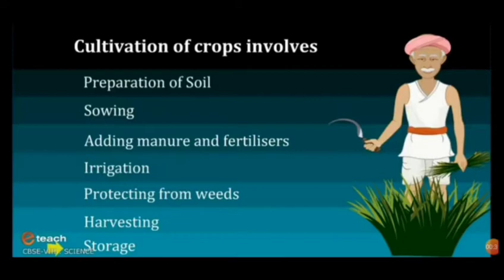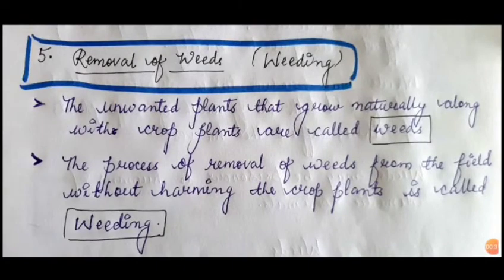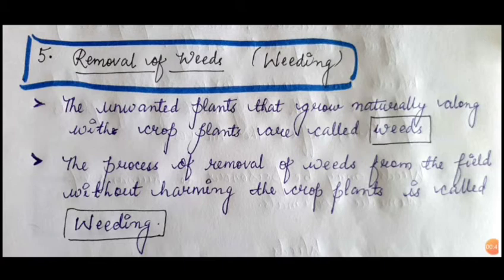Now we'll move on to the next step, which is protecting from weeds — or you can say removal of weeds. First of all, you must know what are weeds. The unwanted and undesirable plants that grow naturally along with the crop plants are called weeds. The process by which these weeds are removed from the field without harming the crop plants is called weeding.